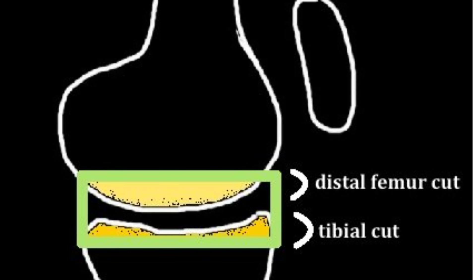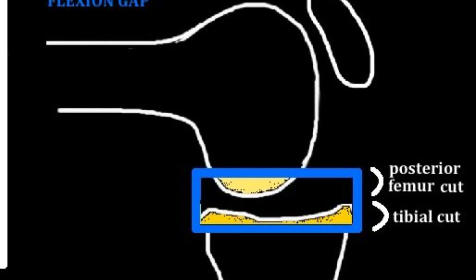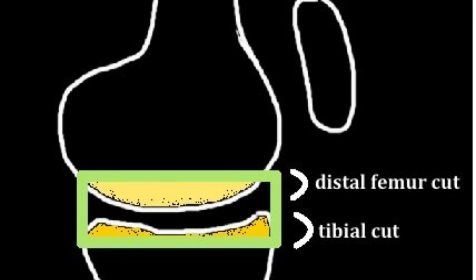The tibial cut is aimed at zero degrees, perpendicular to the mechanical axis. It is arguably the most important bone cut in TKA because it affects both the flexion and extension gap — think of it as the foundation upon which you build the TKA. The tibia affects both gaps because it articulates with the distal femoral condyles in extension and the posterior femoral condyles in flexion. Contact point changes significantly for the femur during the knee arc of motion, but much less for the tibia.